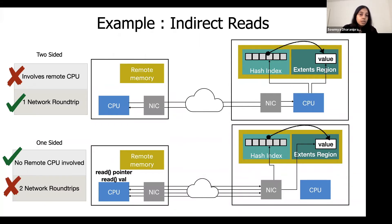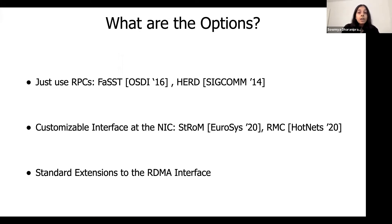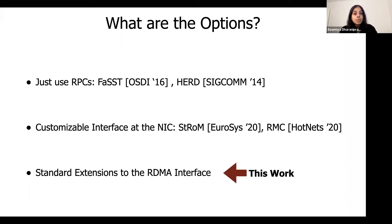What can we do about this? We could forgo the use of one-sided operations completely by relying on RPCs, but this would mean giving up all the CPU efficiency that one-sided operations provide. We could also allow applications to install their own custom one-sided logic at the NIC, but this comes with significant deployment and security challenges. There is a third option this work explores: can we propose a set of standard extensions to the current RDMA interface that addresses this problem?